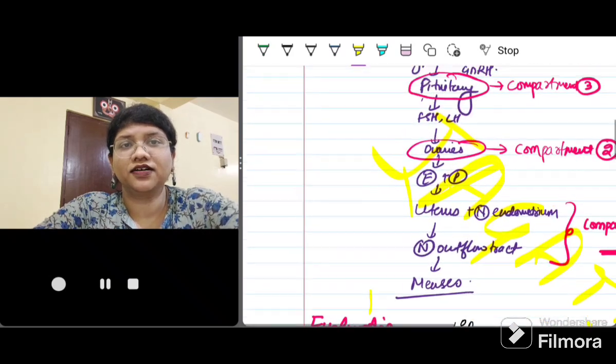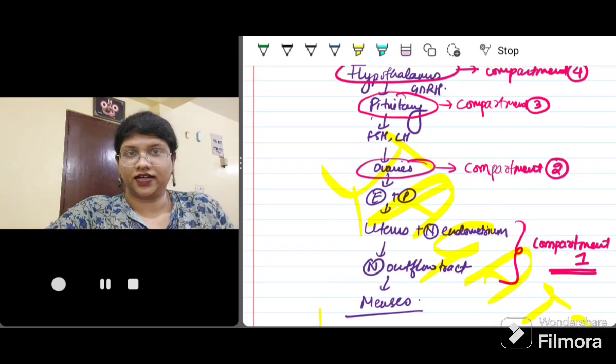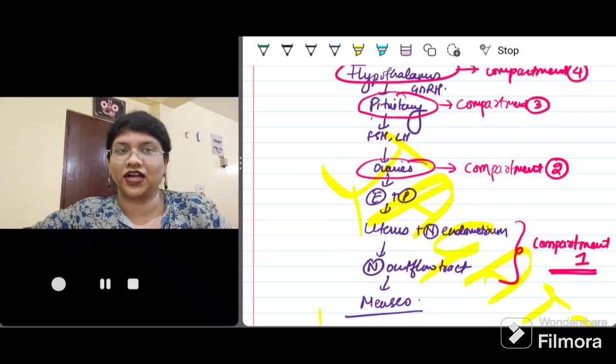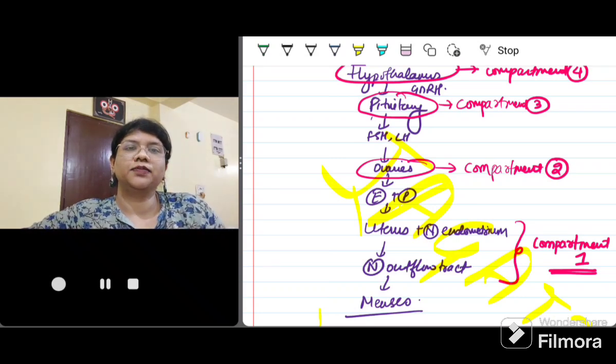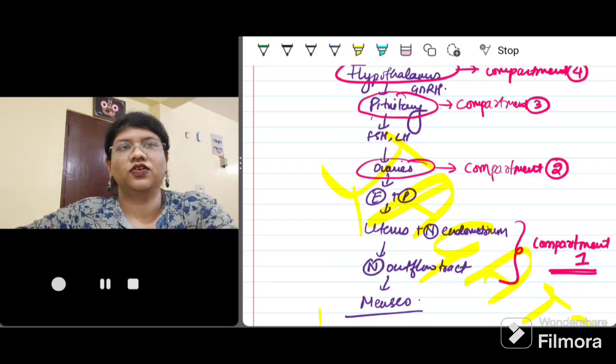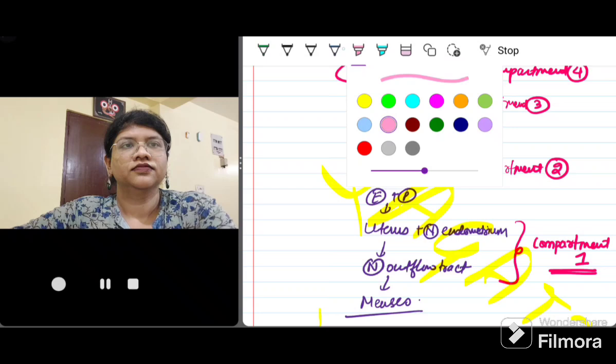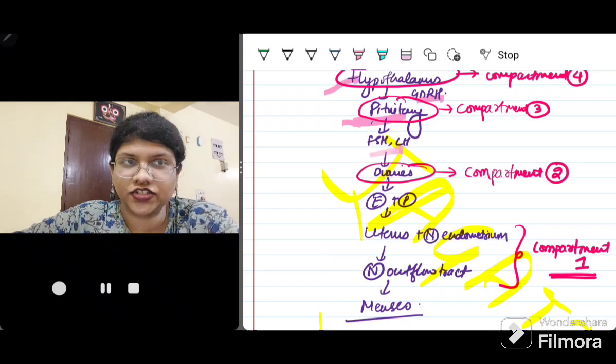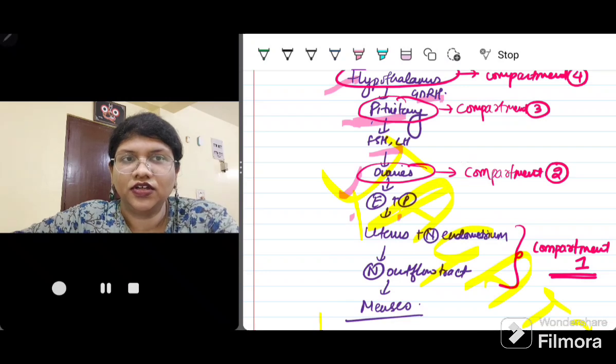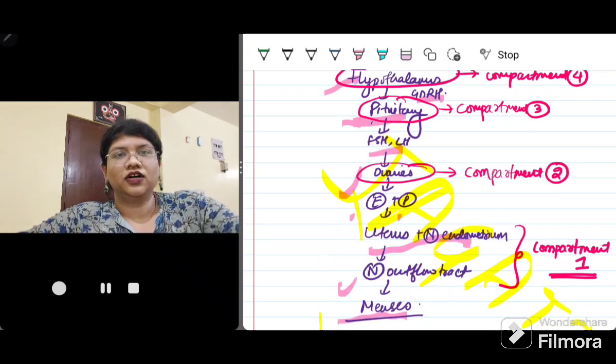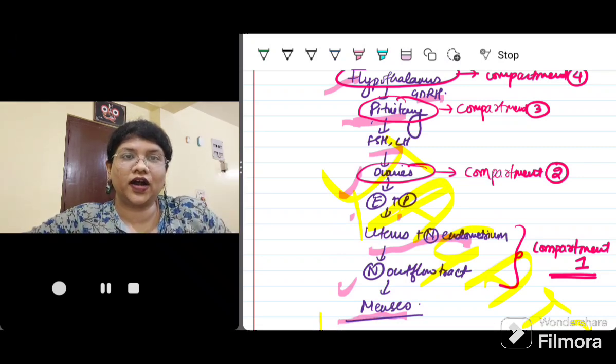Before going into the causes, we should understand the physiology of menstruation, how it is occurring. For a normal menses to occur, from the CNS till the outflow tract, everything has to be normal. The hypothalamus produces GnRH which acts on pituitary, which will produce FSH and LH, which will act on the ovaries. Ovaries produce estrogen and progesterone, which will act on the uterus and normal endometrium. And if there is a normal outflow tract, the girl will have her menses. So this is the normal physiology and anatomy required for menses to occur.